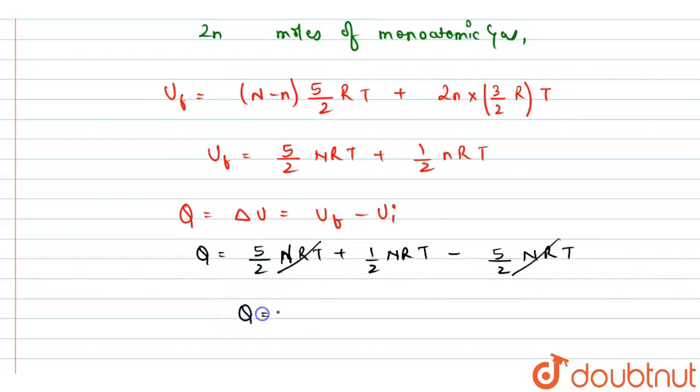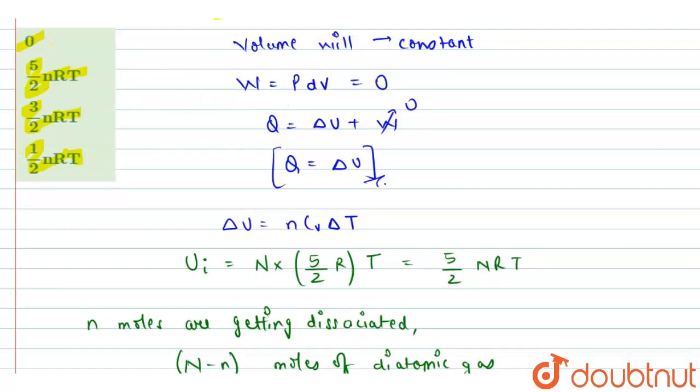And we will be left with Q equals 1/2 nRT. So this is the required answer, and from the given options, option D is the correct answer.